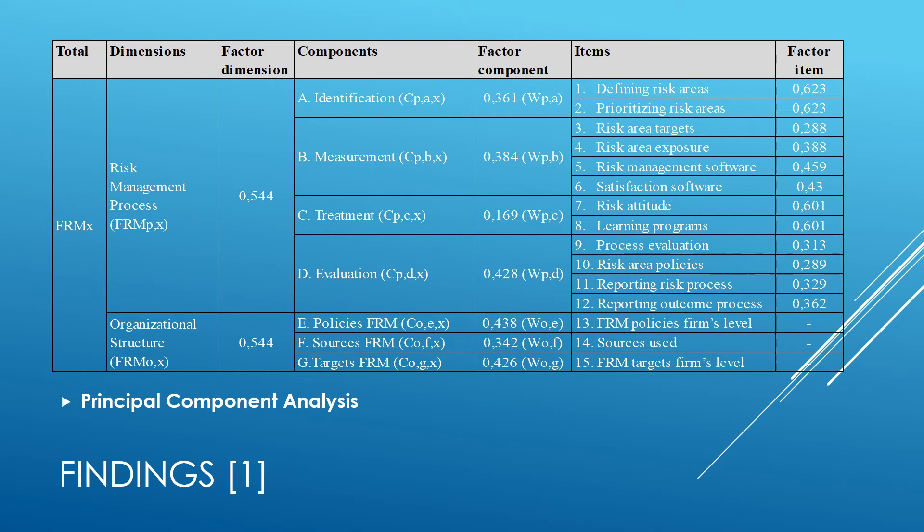Usually, principal component analysis is applied to build a framework by combining several items. In our research, the 15 items stemming from literature remain intact, and principal component analysis is only applied to calculate the several weighting factors. These factors are used to calculate the scores at each level of our financial risk management model. So at components, dimensions and the overall financial risk management score.